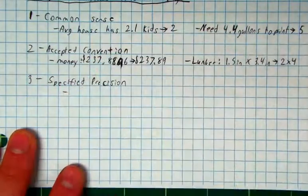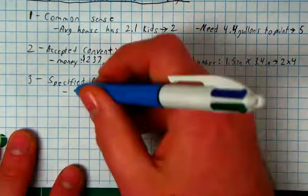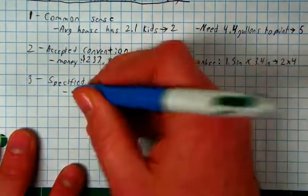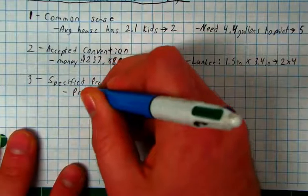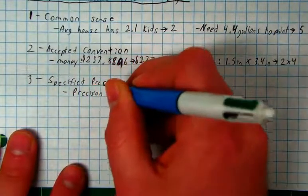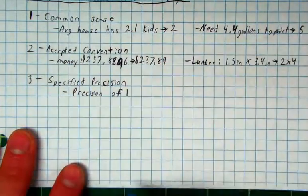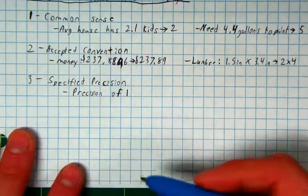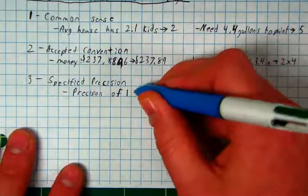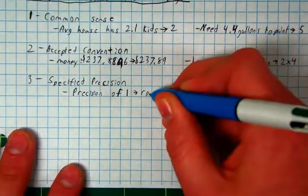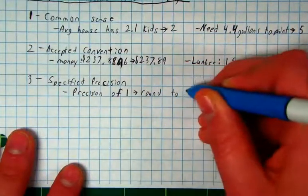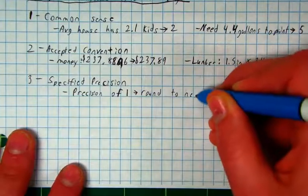Well, in this class, I will tell you how to round specifically in your questions. It'll say something like, precision of 1. And if you took the year 1 class, you've seen this kind of answer. Precision of 1. Does anybody remember what that means, what we round to? Round to the nearest whole number, exactly. Precision of 1 means round to the nearest 1, the nearest whole number.